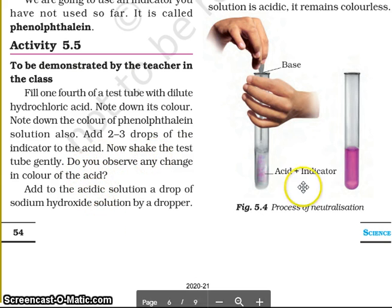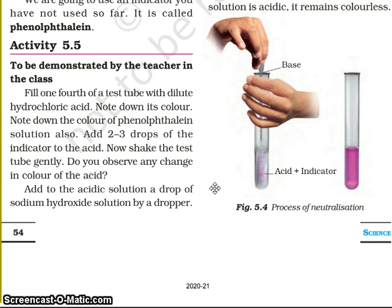Fill one fourth of a test tube — this glass is a test tube, you can see here — with dilute hydrochloric acid. Note down its color. Note down the color of phenolphthalein solution also. Add 2 to 3 drops of the indicator to the acid. Now shake the test tube gently. Do you observe any change in color of the acid?